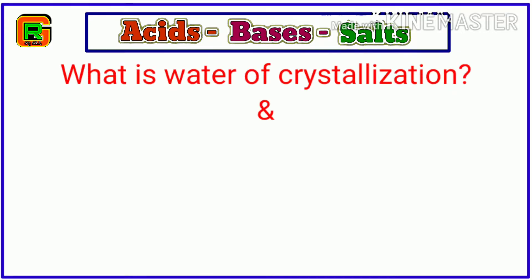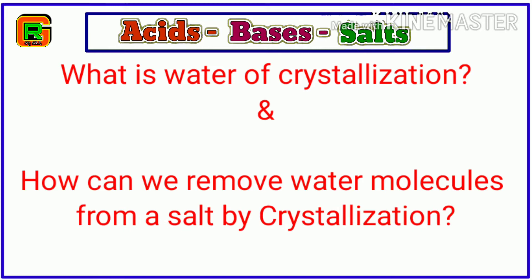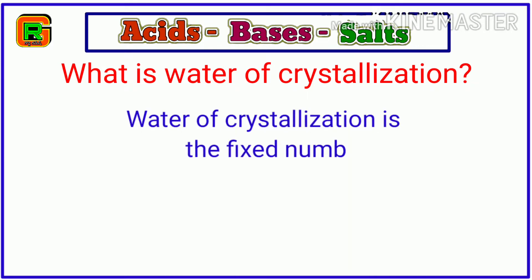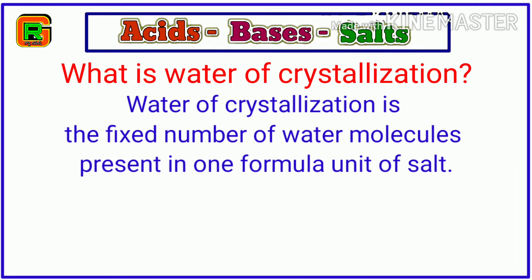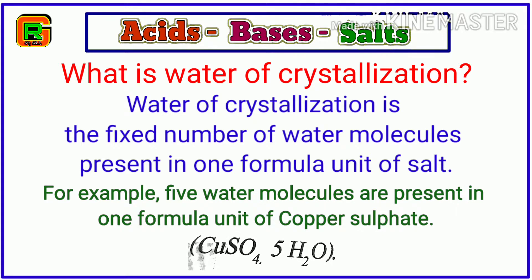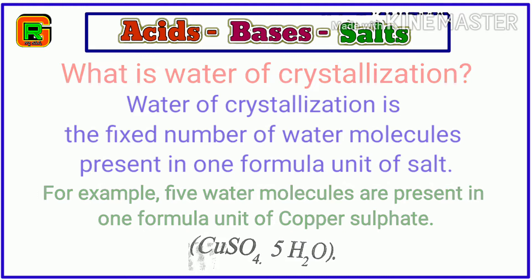What is water of crystallization and how can we remove water molecules from a salt by the process of crystallization? Water of crystallization is the fixed number of water molecules present in one formula unit of a salt. For example, five water molecules are present in one formula unit of copper sulphate, so the formula for copper sulphate is CuSO4·5H2O. These five water molecules are called the water of crystallization of copper sulphate.